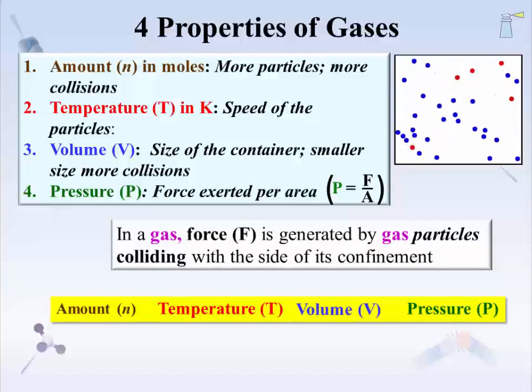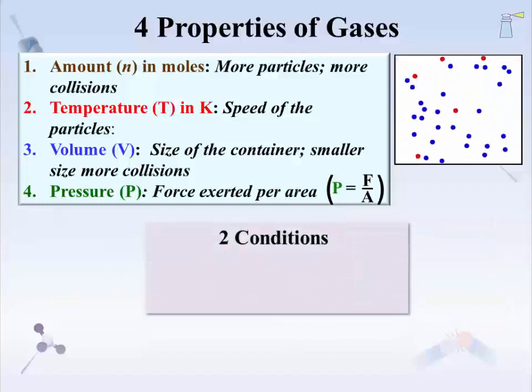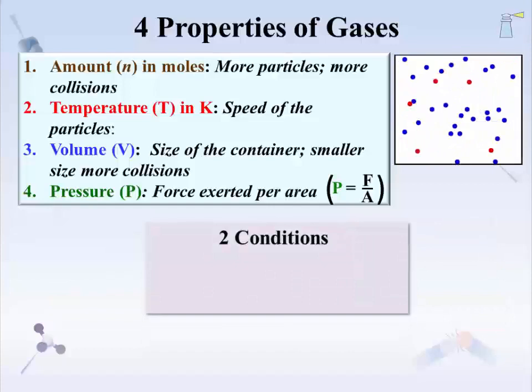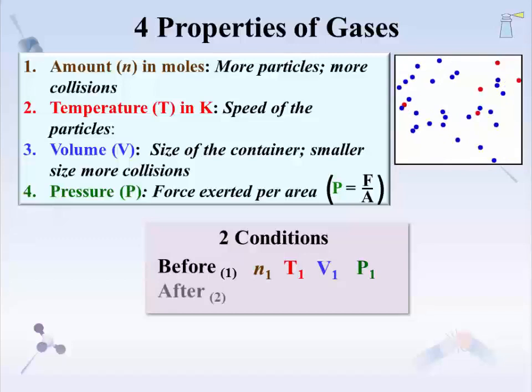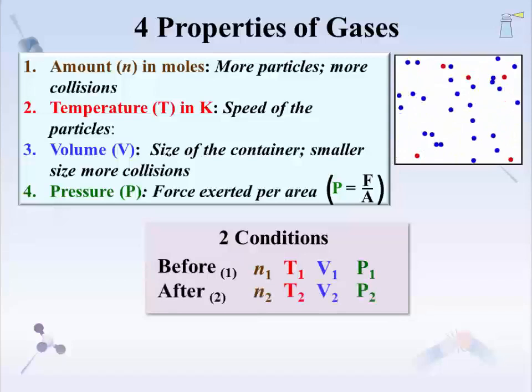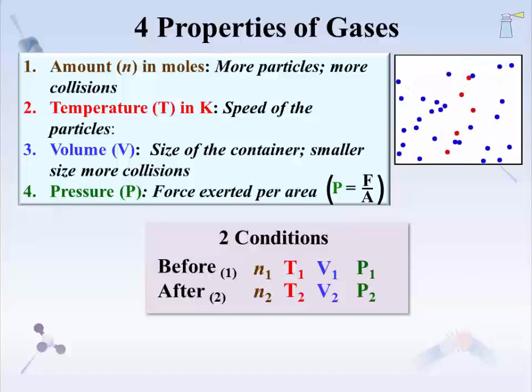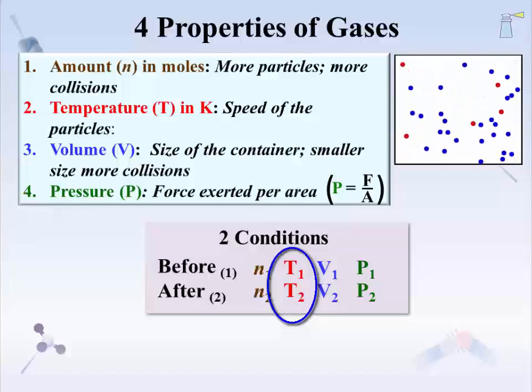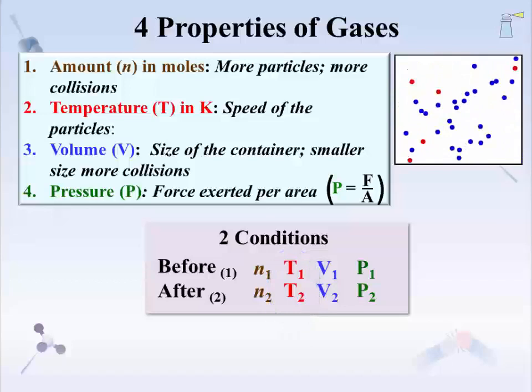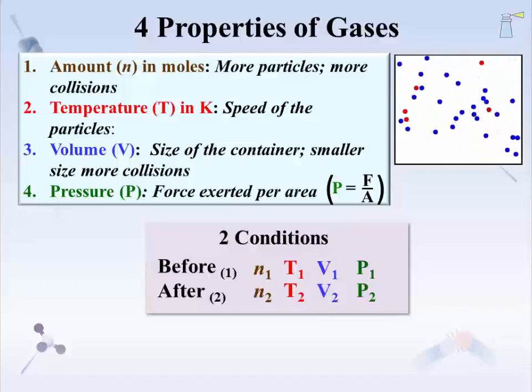Considering gas from a collision perspective can help make sense of gas law. While we are at the four properties, we might as well clear up what 'two conditions' really means. It is simply a recognition that some condition or gas property has been changed. There will be a set of values for the four properties before the change — a subscript of one indicates before — and a set of values after the change — a subscript of two indicates after. Before and after, or initial and final, are cues that a change has occurred. Not all the properties will have different values with the change; T1 and T2 can be the same temperature.